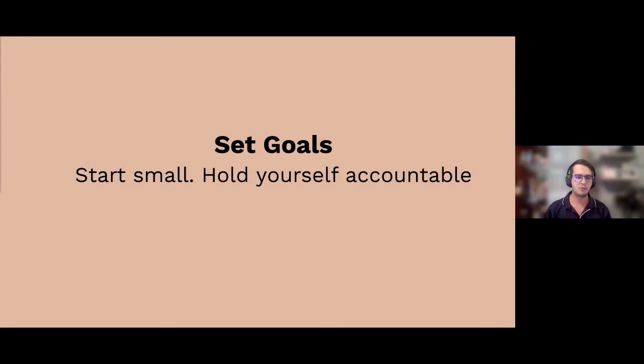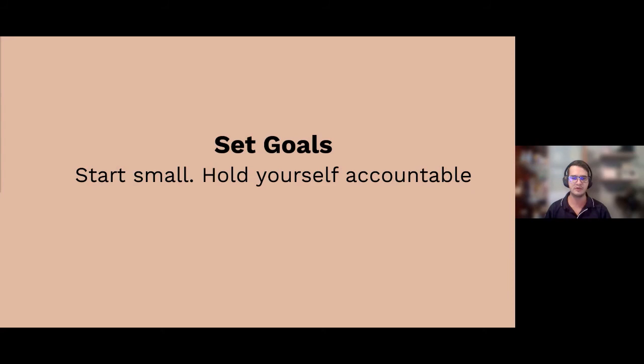Set small goals for yourself. For me, it was scheduling things: spend at least half an hour outside walking in nature each day, make sure you have a wholesome life, and then build up from there — start focusing on hobbies again. I used to love hiking; you start with shorter hikes and build up gradually.